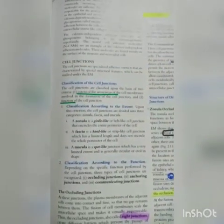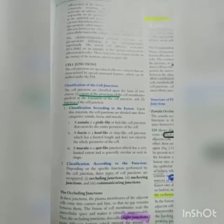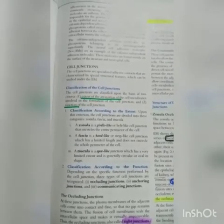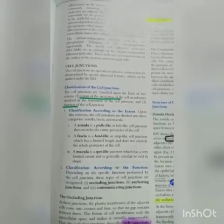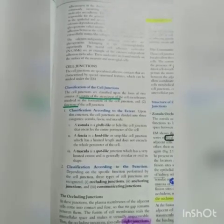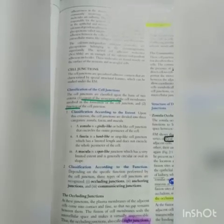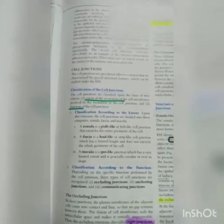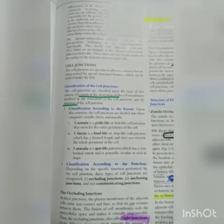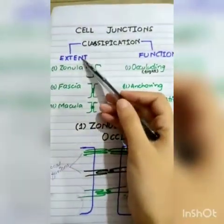My topic is cell junctions, their classification. Cell junctions are specialized adhesive contacts characterized by special structural features which can be studied under the electron microscope. Cell junctions allow two cells to develop contact. They are classified based on two systems: extent-based and function-based.